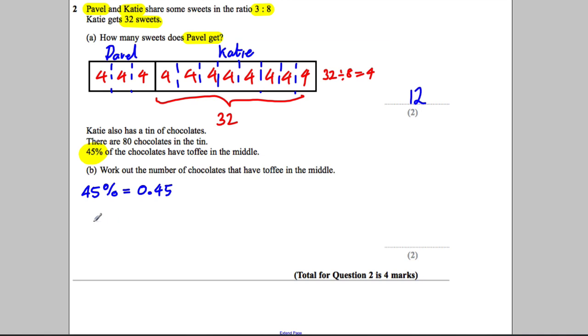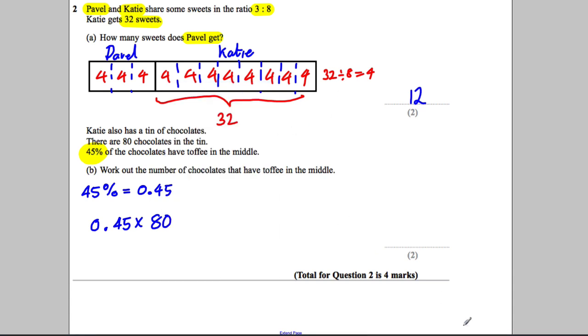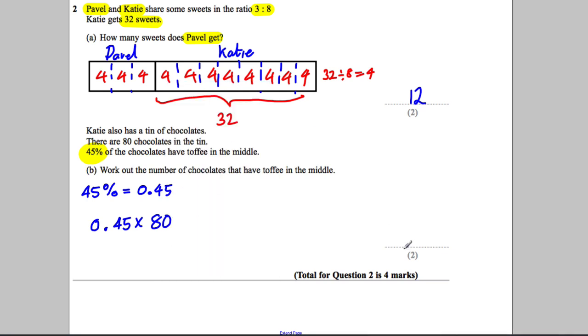So 0.45 multiplied by 80, and that will tell us how many chocolates have toffee in the middle. So we just do the following: 0.45 multiplied by 80 equals 36. So our answer is 36.